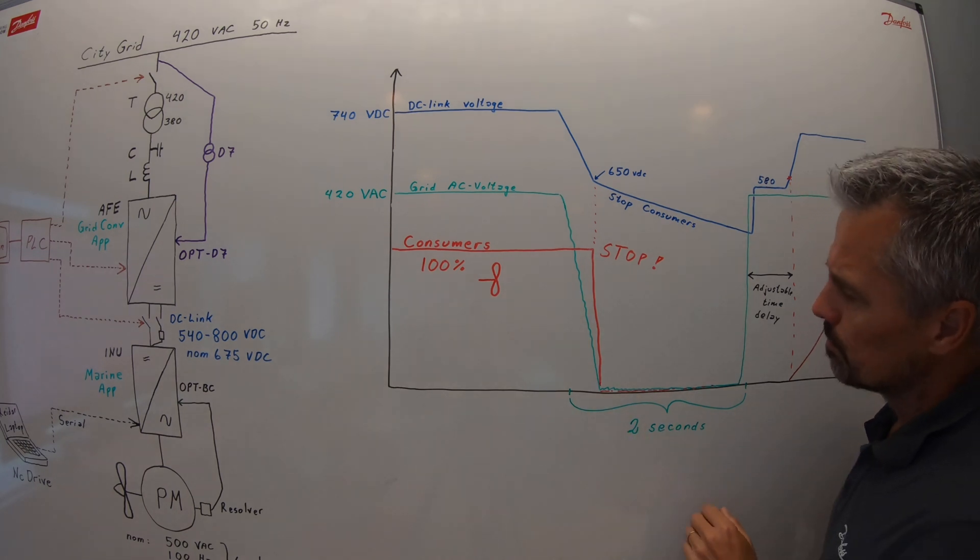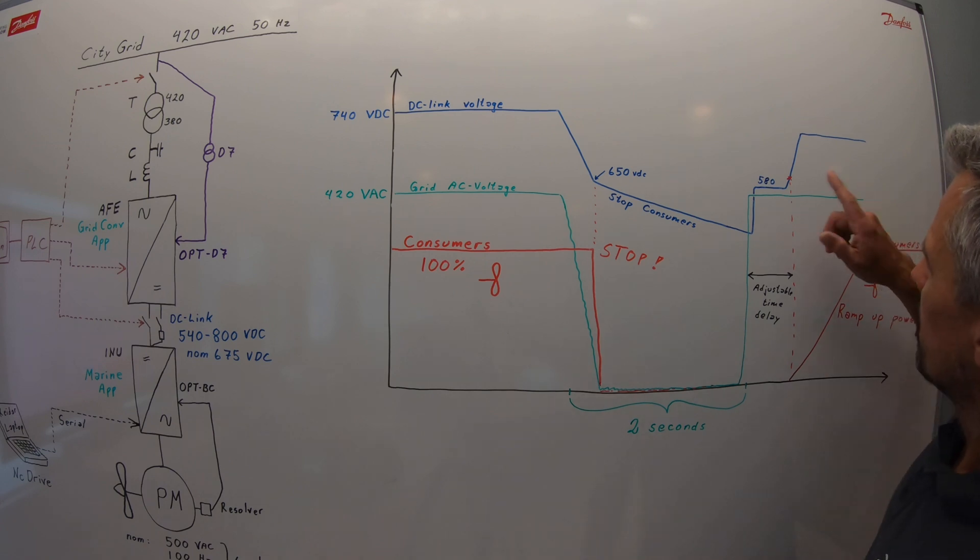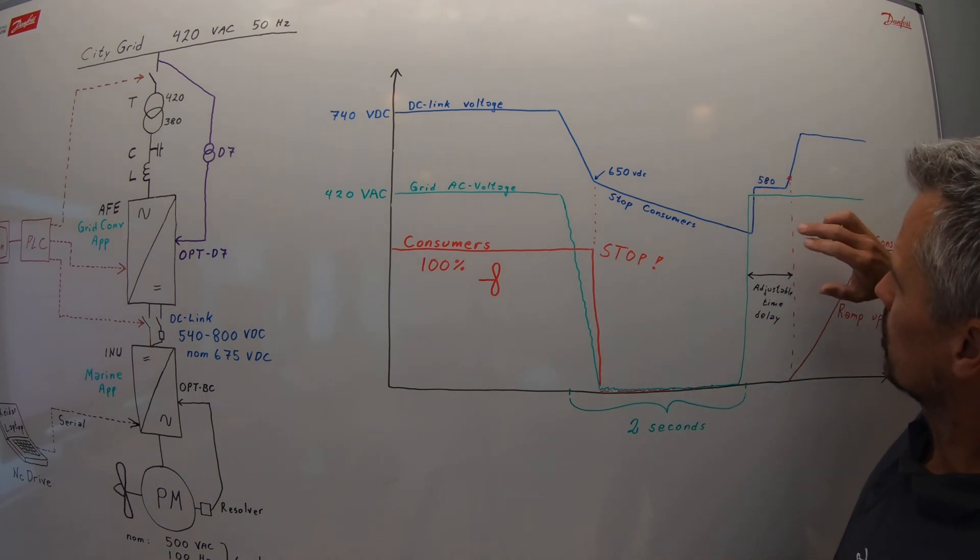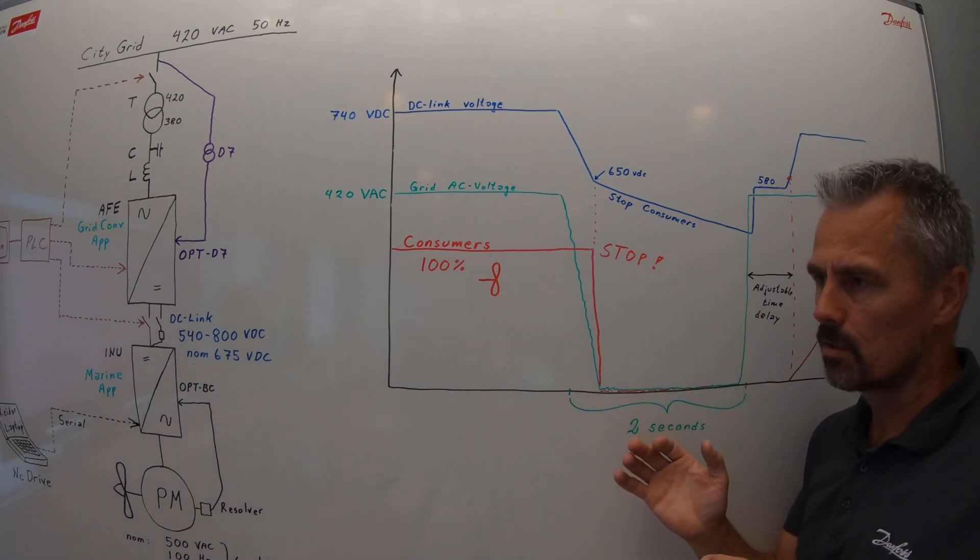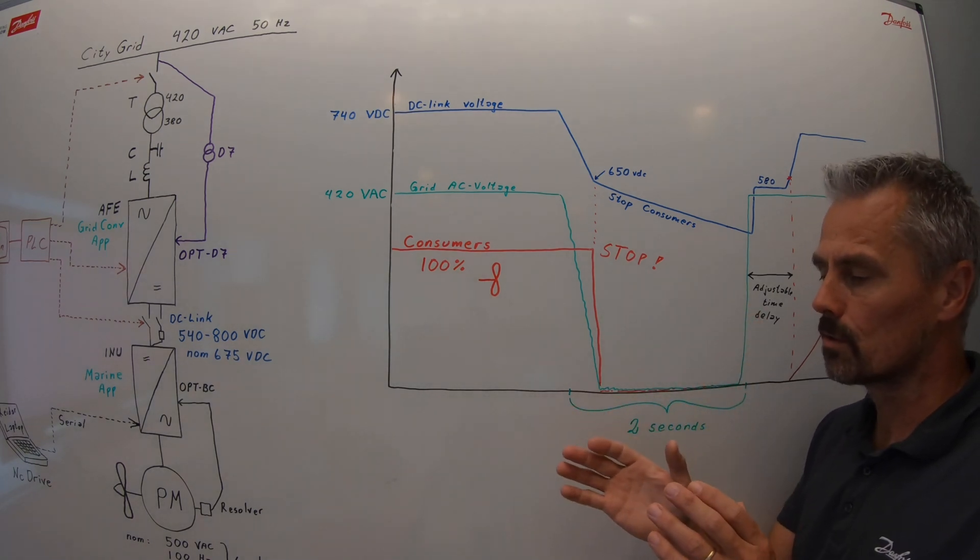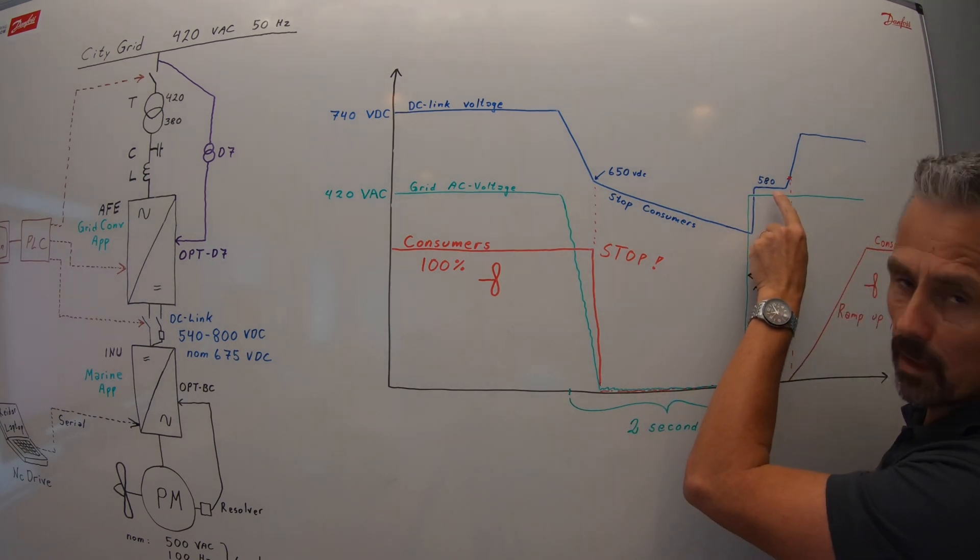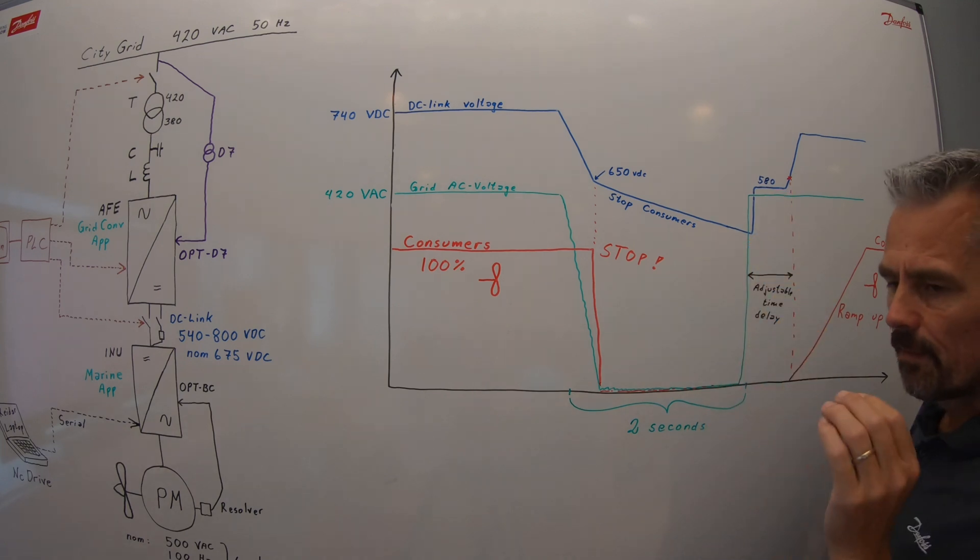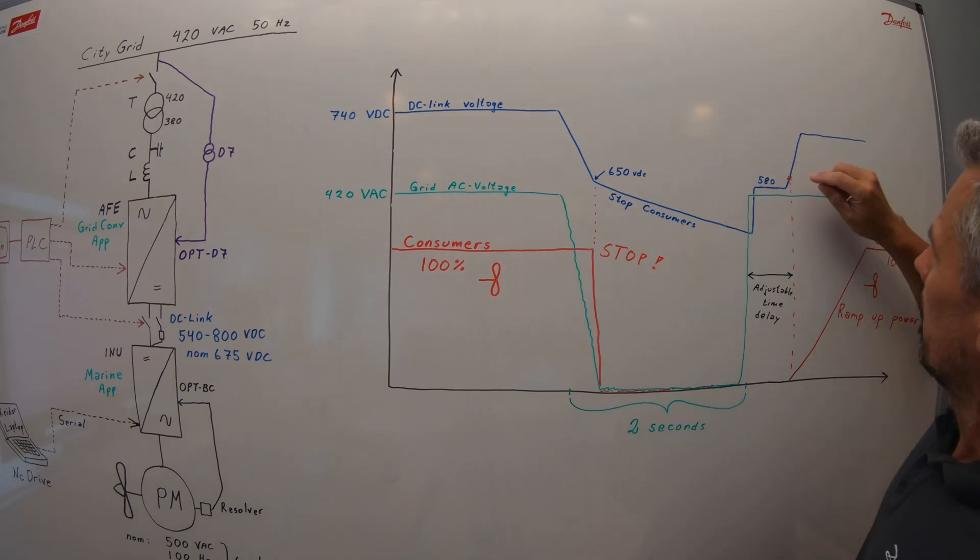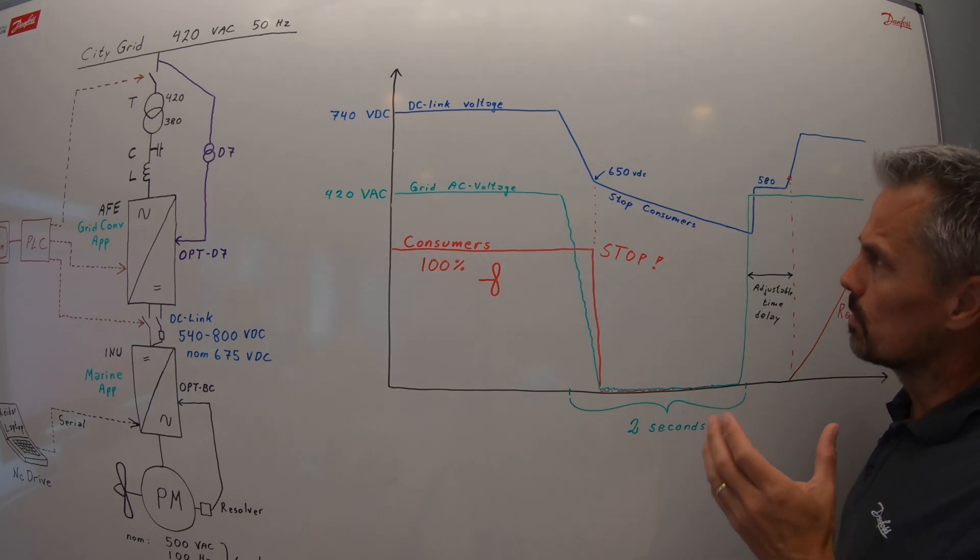After two seconds, that's the requirement from Veritas. Then the voltage on the AC grid comes back. The DC voltage will first start increasing from the pre-charge or from the freewheeling diodes through the grid converter. It will go up to the diode rectifier level, in this case 580 volts.